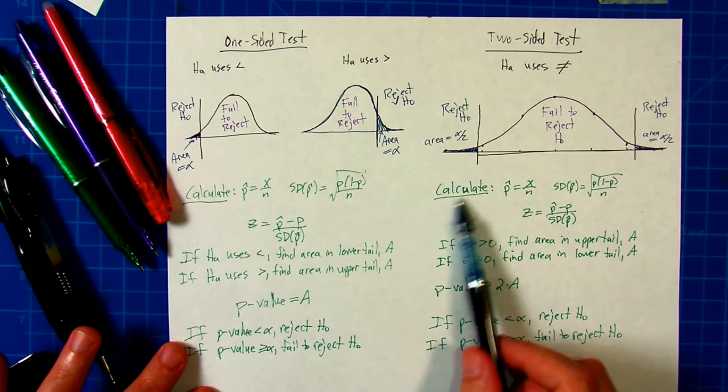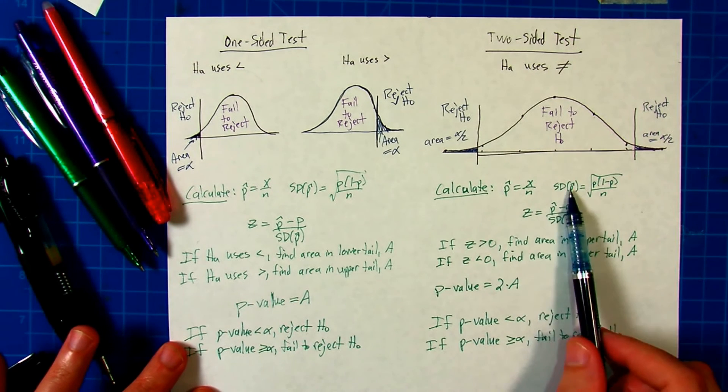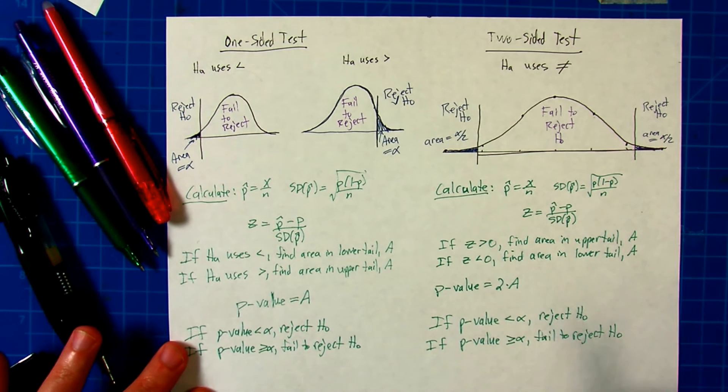Now, the calculations, you'll notice, work the exact same way: p-hat, standard deviation of p-hat, and z. But from there is where it takes a turn.